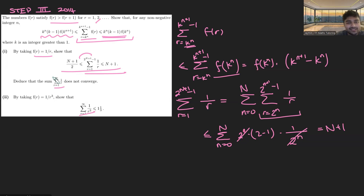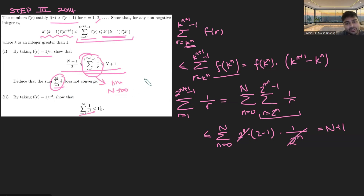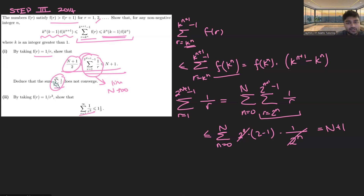Why does this mean the harmonic sum doesn't converge? We've shown that the sum from r = 1 to 2^(n+1) − 1 of 1/r is at least (n+1)/2. To compute the infinite harmonic sum, we take the limit as n → ∞. By the lower bound, the partial sums are at least (n+1)/2, which clearly goes to infinity. Therefore this infinite sum must also diverge, not converge.